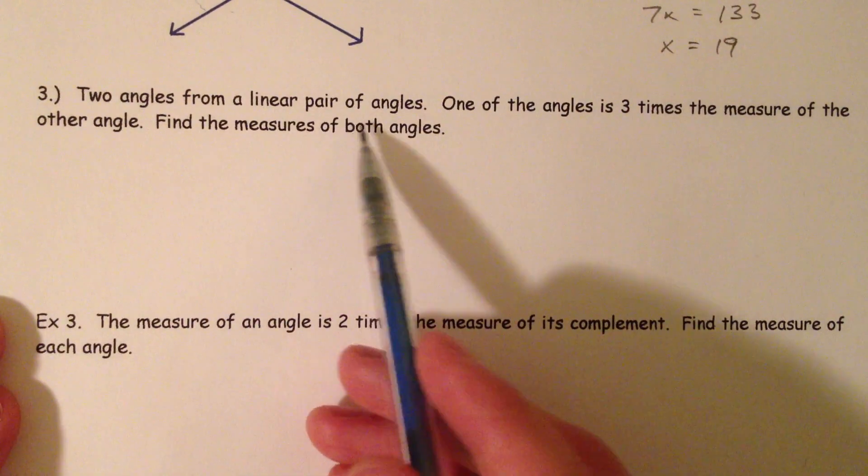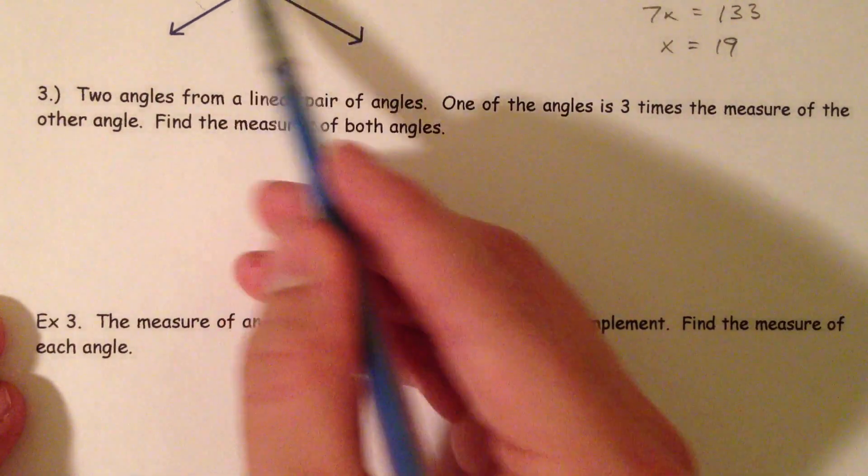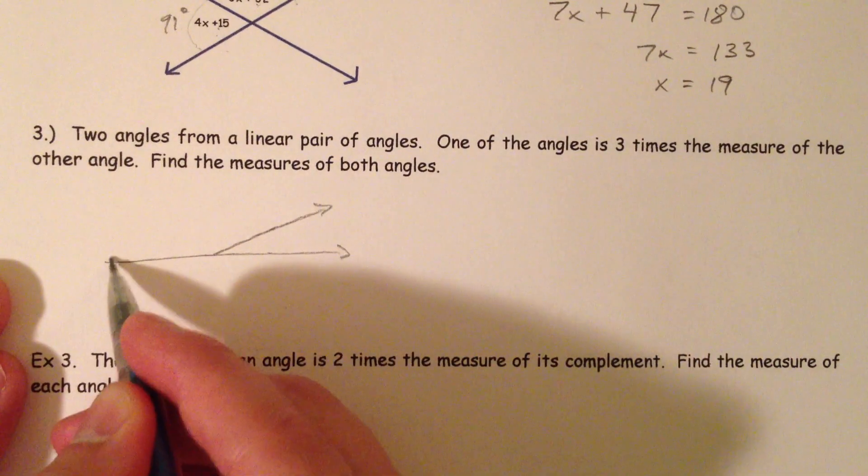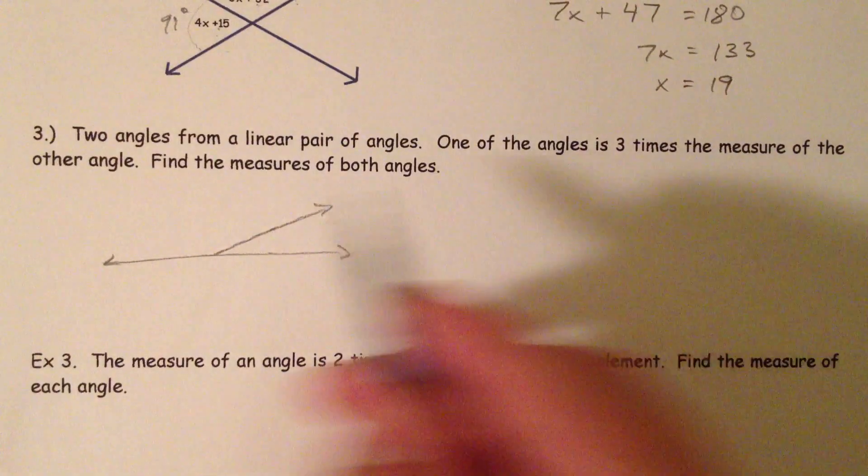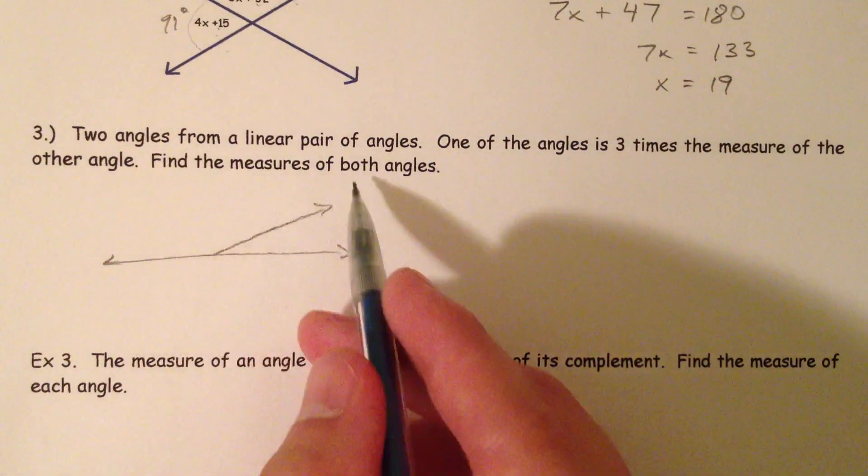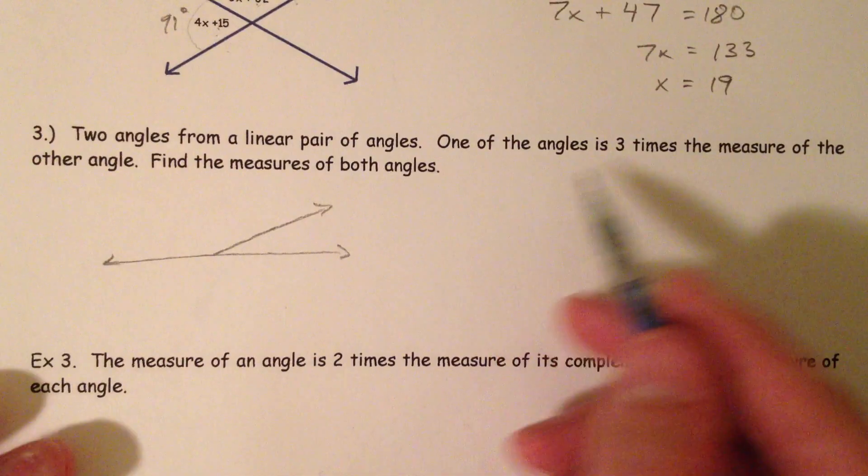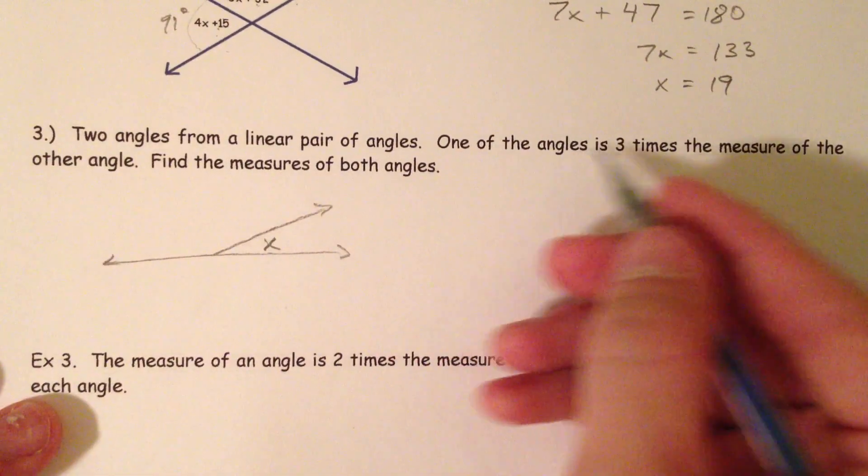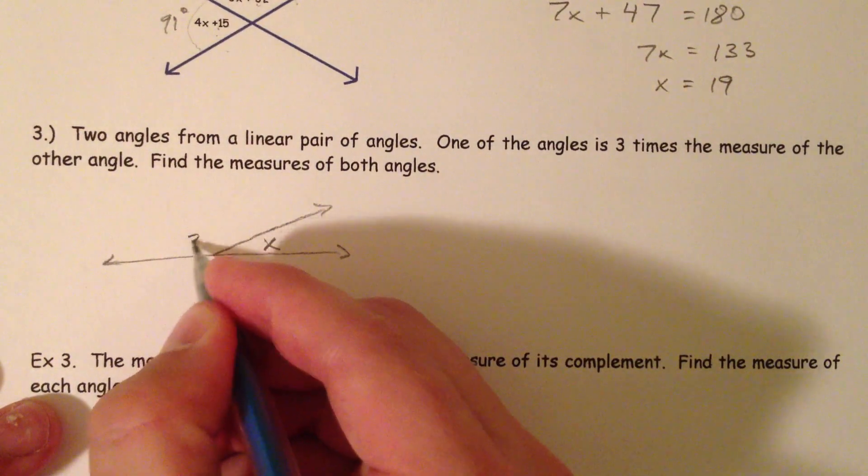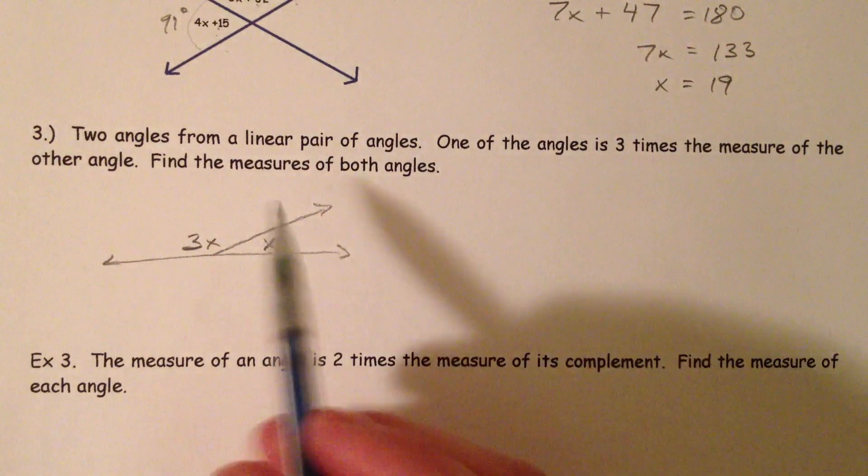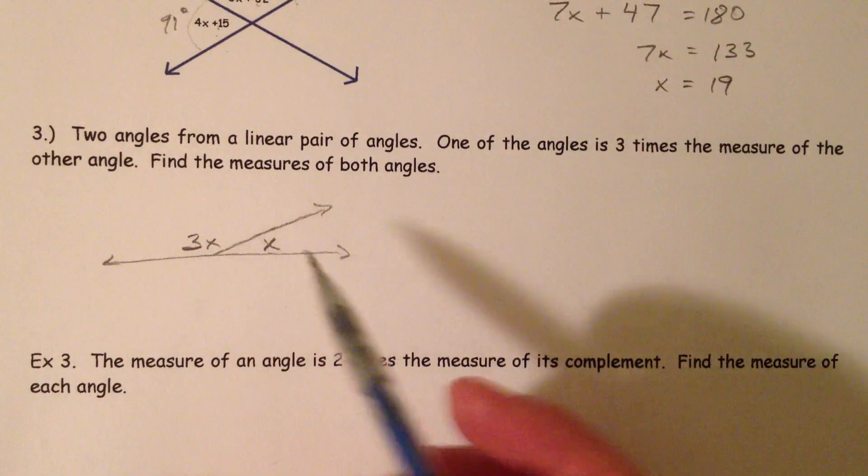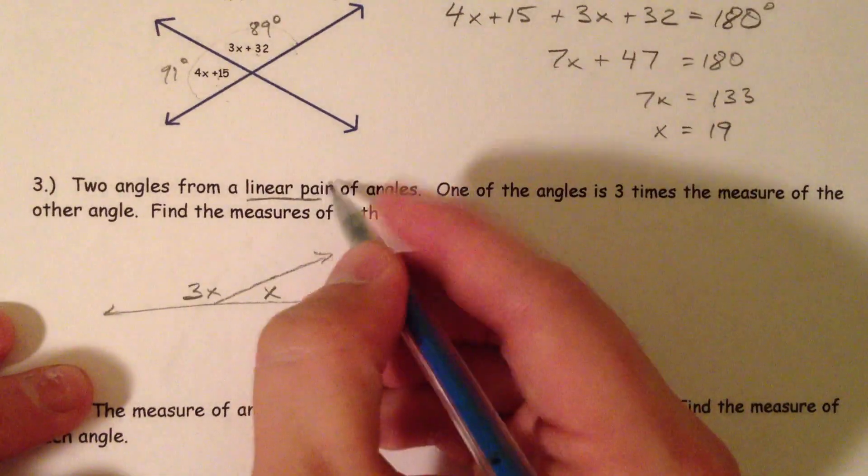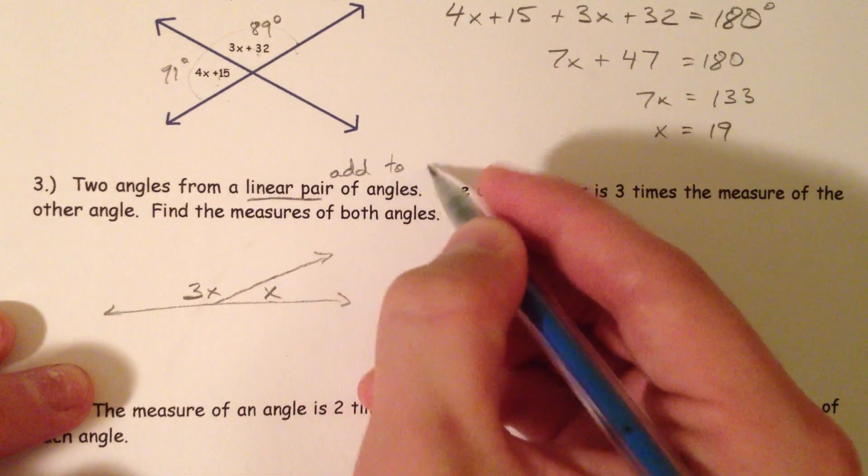Two angles form a linear pair of angles. Linear pair? That's what we just had up there. So a linear pair. One of the angles is 3 times the measure of the other angle. Find the measure of both angles. So let's say if one of the angles is 3 times the other. So if we have one angle, call it X. The other one is 3 times as big. So let's call it 3X. I may not be to scale. It actually looks like it's much more than 3 times as much.